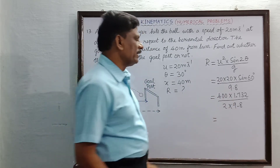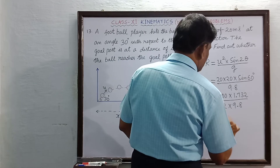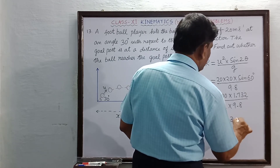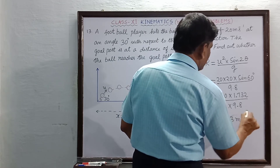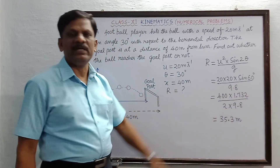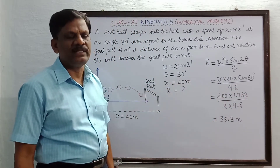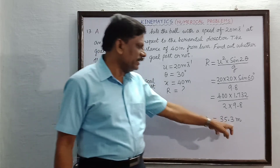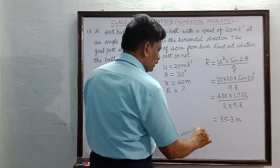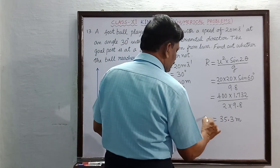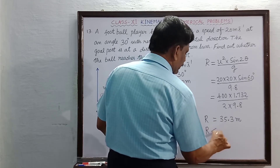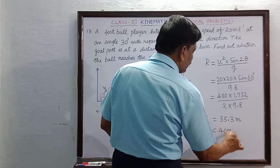Checking with the calculator, the result comes out to be 35.3 meters. So the range R is found to be equal to 35.3 meters, which is less than 40 meters.